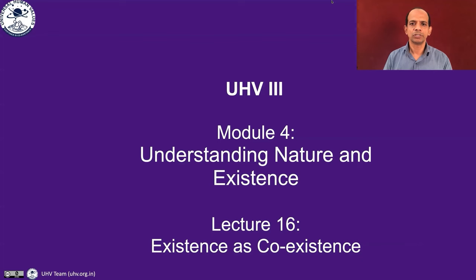Hello everyone. Welcome to the 16th lecture of the course. This is the first lecture of module 4. In module 3, we tried to understand the human being, particularly the self. We looked into the activities and potentialities of the self, including the higher level activities and how they guide the lower activities. We also looked into the various possible sources of happiness and tried to make out what would be the continuous source of happiness in the self. Now, in this module, we are going to discuss existence and we will see how the whole existence is there as coexistence and how there are different orders in nature with their innateness, natural characteristic, and how this is all an expression of coexistence. So in this module, we are going to study about nature and existence and in this lecture, we will try to understand the whole existence as coexistence.